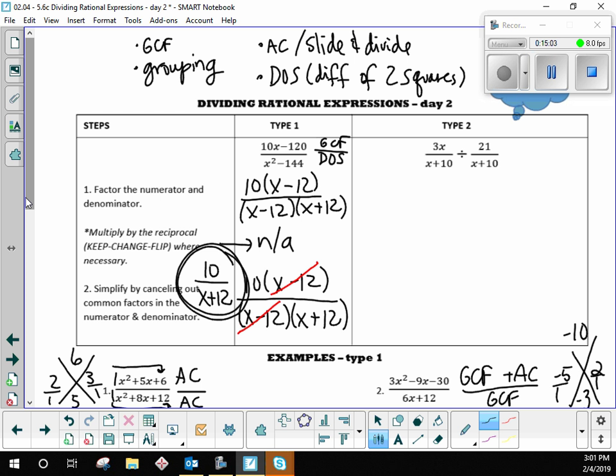3x over x plus 10 divided by 21 over x plus 10. The first thing you want to do still is factor both the numerator and the denominators. This is an easy problem, actually. There's hardly no factoring to do. 3x is already in its factors, 3 times x. x plus 10 can't be factored because of the plus. All it really can do is be grouped together. But 21 can factor. It's 3 times 7, all right?